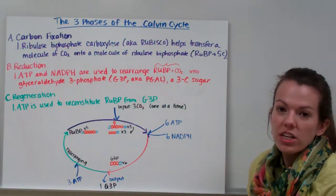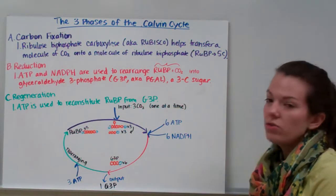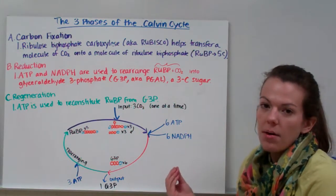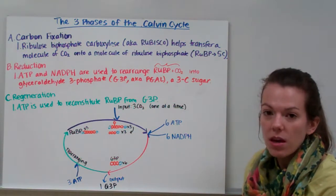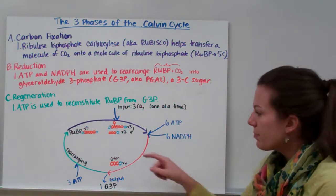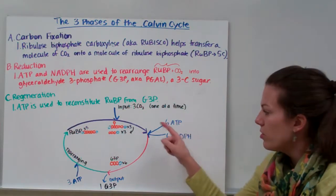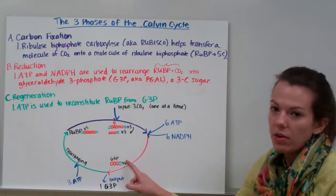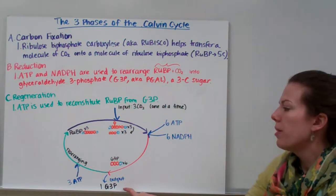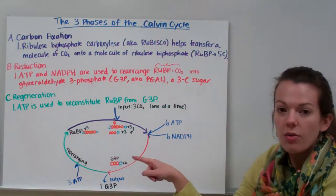And then our third phase is regeneration. We have to regenerate our RUBP so that we can redo our Calvin cycle. During regeneration, ATP is used to reconstitute RUBP from G3P. So during our first phase, we're making some sort of intermediate that's a result of adding carbon dioxide to RUBP, and rubisco is the enzyme that helps that to happen. Three carbon dioxide are going to be inputted one at a time. We get some sort of intermediate, and then we're going to use energy and NADPH to rearrange everything into G3P. Once we have our G3P, we actually make six of them. We're going to release one as an output, and then our other five G3P are going to be rearranged with an input of energy into making three molecules of RUBP so that we can redo our Calvin cycle.